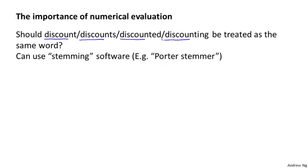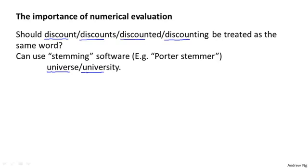In natural language processing, the way this is done is using a type of software called stemming software. If you ever want to do this yourself, search for the Porter Stemmer, which is one reasonable piece of software for doing this sort of stemming — it lets you treat all of these words like discount, discounts, and so on as the same word. However, using stemming software can help, but it can hurt too, because for example the software may mistake the words 'universe' and 'university' as being the same thing, since these two words start with very similar characters.